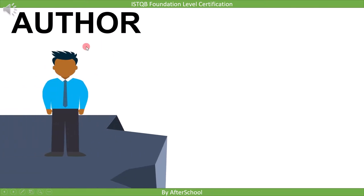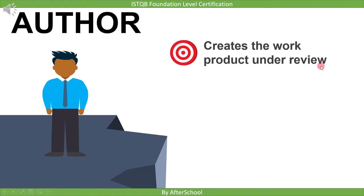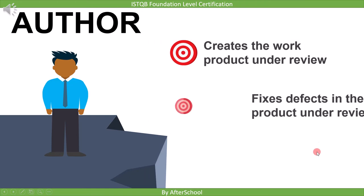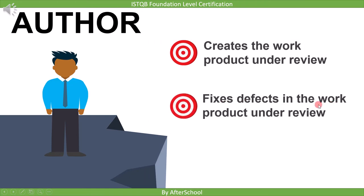Now let's see each responsibility in detail. First is the author. Author creates the work product under review. If you are in the requirement stage, the work product is the requirement, so the person who wrote the requirement is the author. Similarly, if you are in the implementation stage, the person who writes the code is the author. The next responsibility of the author is to fix the defects found in his module, since author already knows the work product. So the author's responsibility is simple: create the work product and fix the defects found in it.